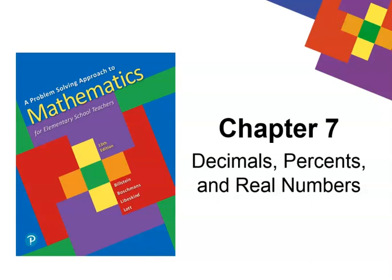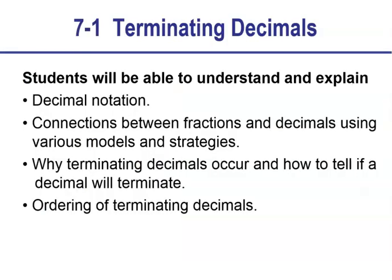Hello, teachers! Let's start a new chapter — Chapter 7: Decimals, Percents, and Real Numbers. In section 7-1, we're going to talk about terminating decimals. At the end of this section, you'll be able to understand and explain decimal notation, connections between fractions and decimals using various models and strategies, why terminating decimals occur, how to tell if a decimal will terminate or keep going, and ordering of terminating decimals.